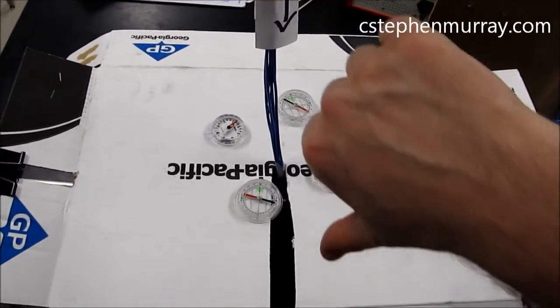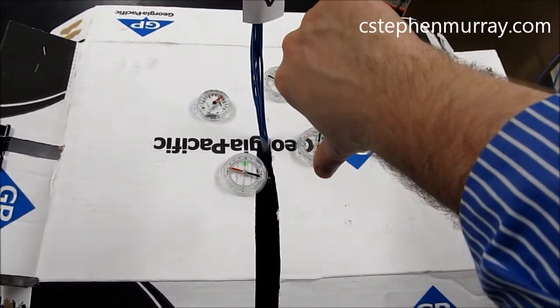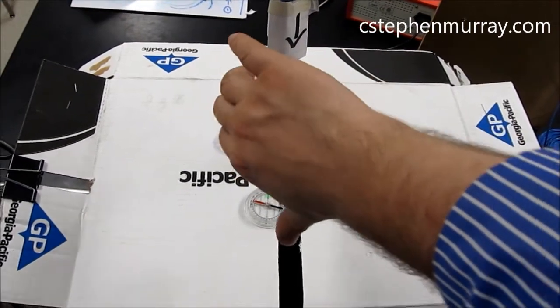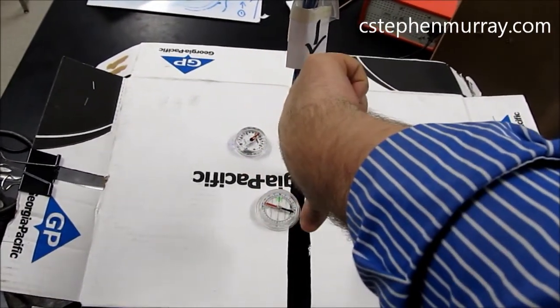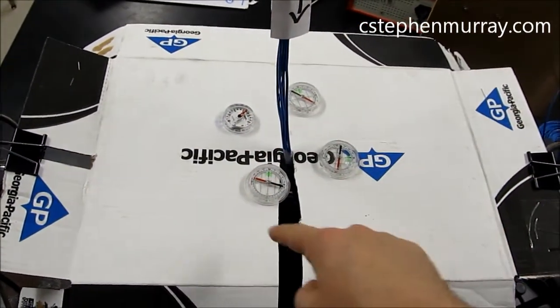This is in accordance with the right-hand rule. If your thumb is pointing down the direction of the current flow, wrap your fingers around the wire, and your fingers go clockwise.